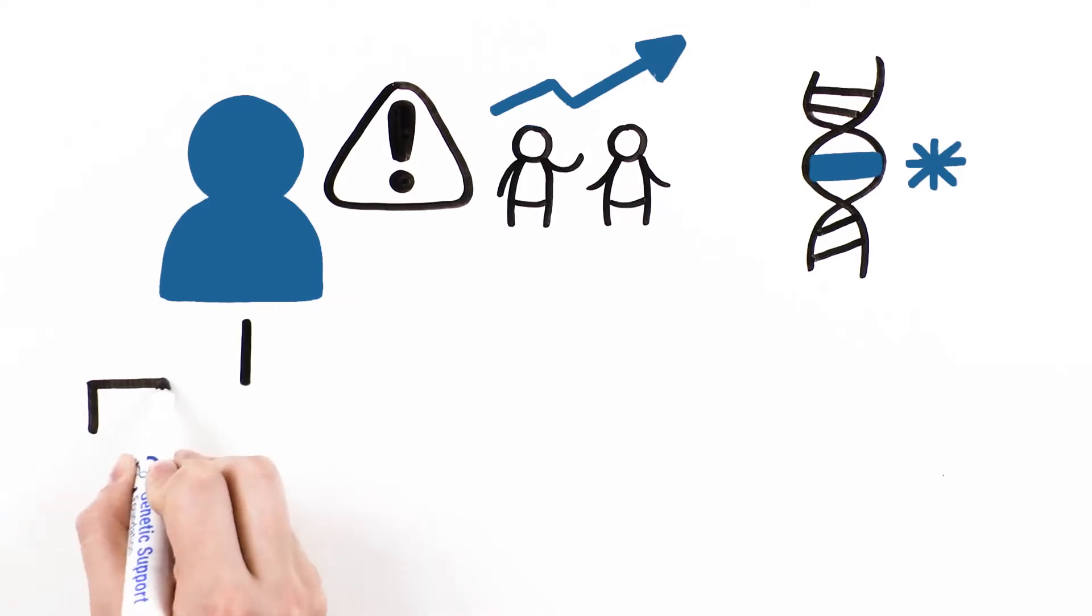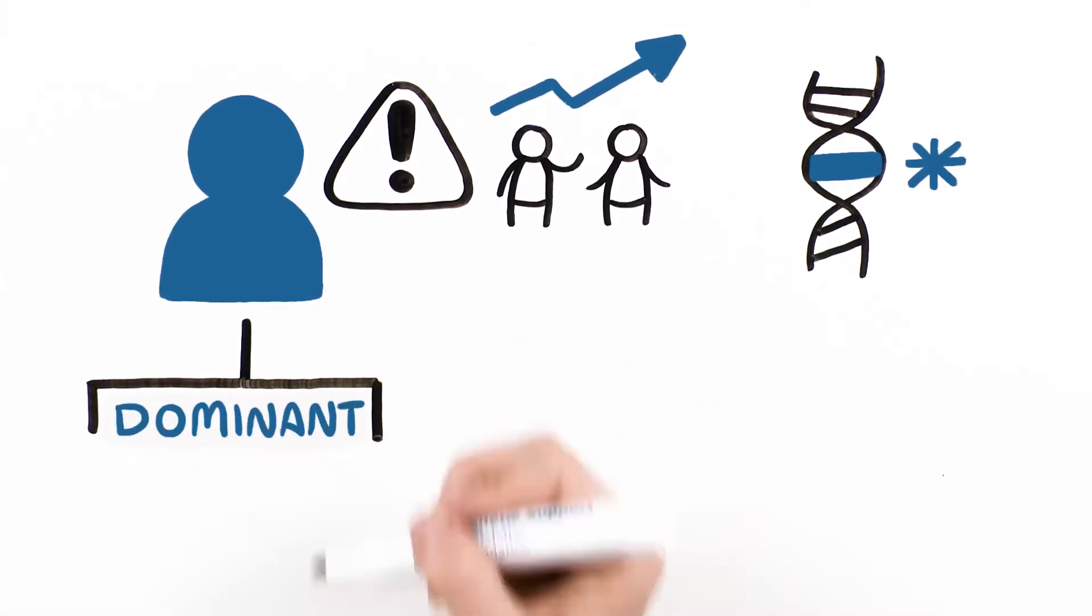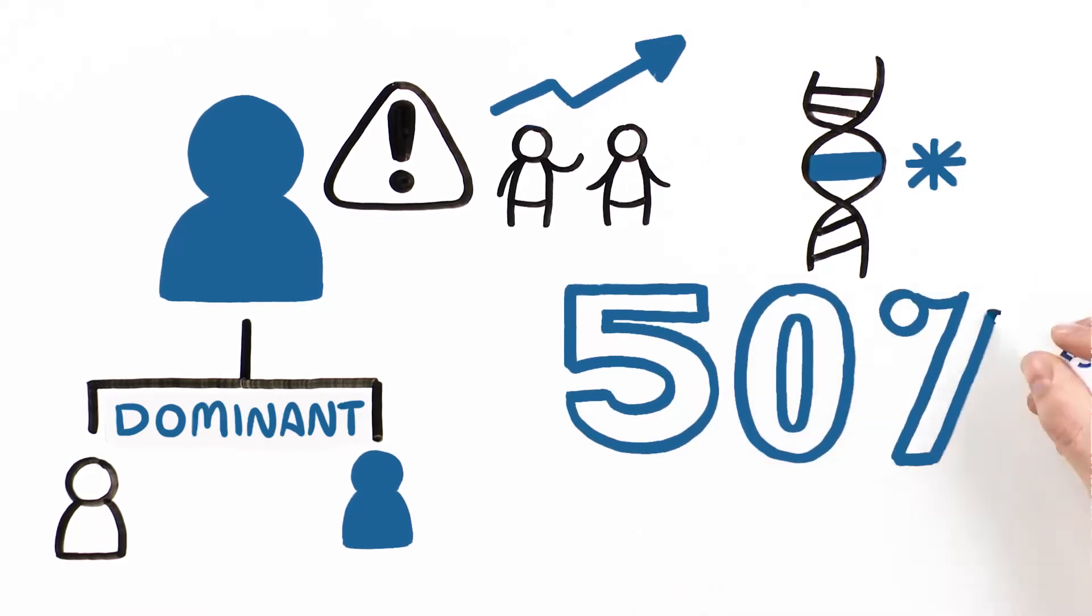Usually, inherited cancer risk is passed on in a dominant pattern in a family. This means there is a 50% chance of a parent passing on the mutation to each of their children.